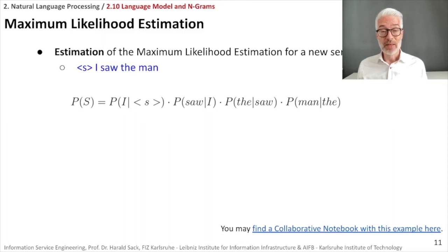Then you want to have the probability of the word saw, second word, based on the assumption that I was already said. Then the probability of the word the, based on the assumption that the word saw already occurred and so on. So this is the estimation of the probability of exactly the occurrence of this new sentence, I saw the man, based on the counts in our corpus.